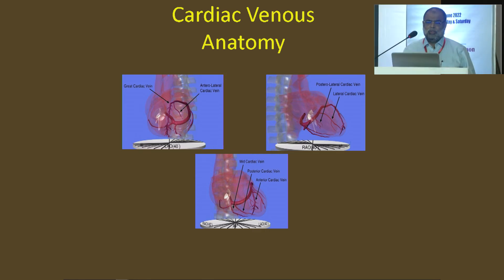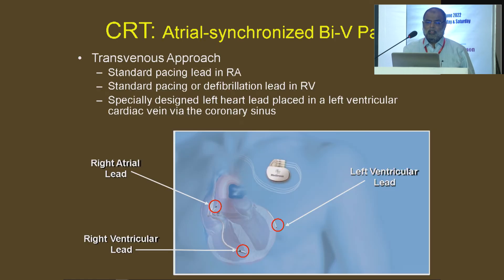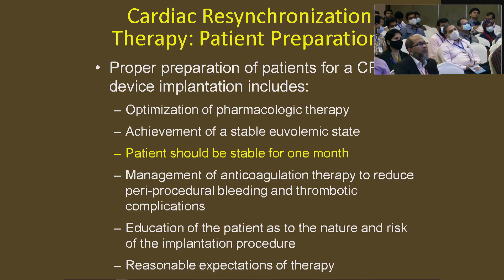Cardiac venous anatomy is important for implanting CRT. The useful target is the lateral vein through the coronary sinus. This is the target vein for the LV lead implantation. For CRT-P, there are three leads: one in the atrium, one in the right ventricle, and one in the left ventricle through the coronary sinus — this is the biventricular pacemaker.